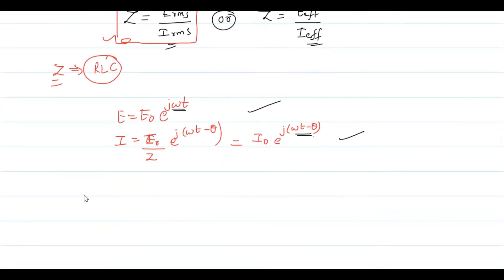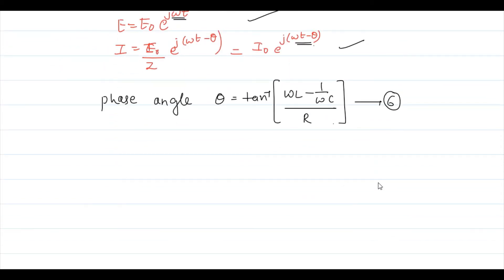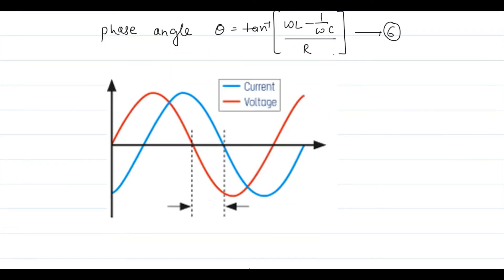The phase angle θ = tan⁻¹[(ωL − 1/ωC) / R]. This is the phase difference between current and voltage in the series LCR circuit. The variation of current and voltage with time can be studied using a wave diagram, which shows the current lagging the voltage by angle θ.